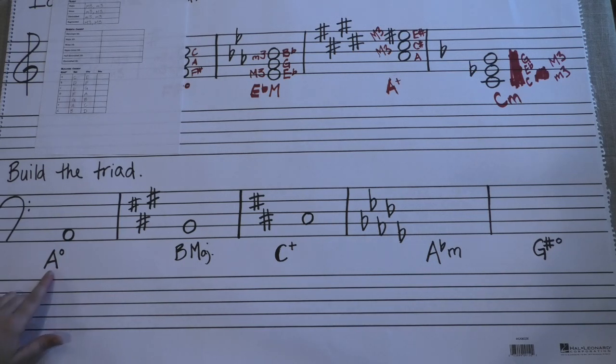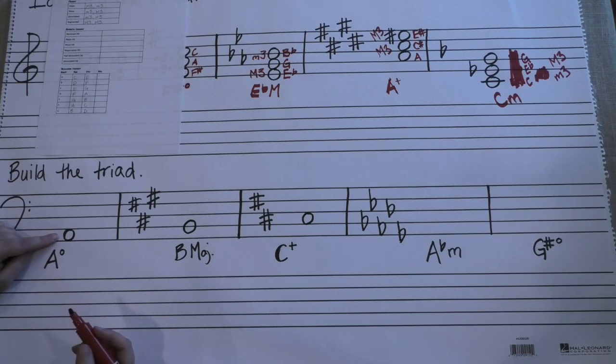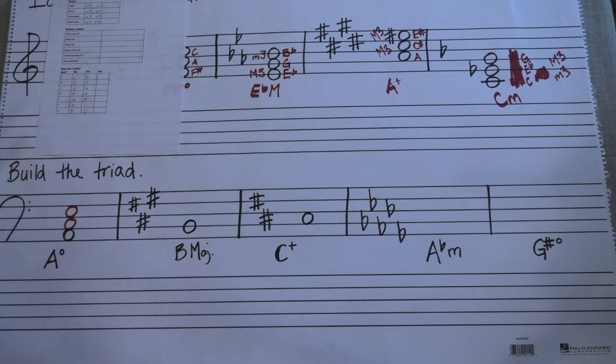So first we start out with A diminished. We've got our A already on there for us. And the first thing that you do, because we're still in root position, everything's going to have the snowman format, right? So we've got these notes here, A, C, E.